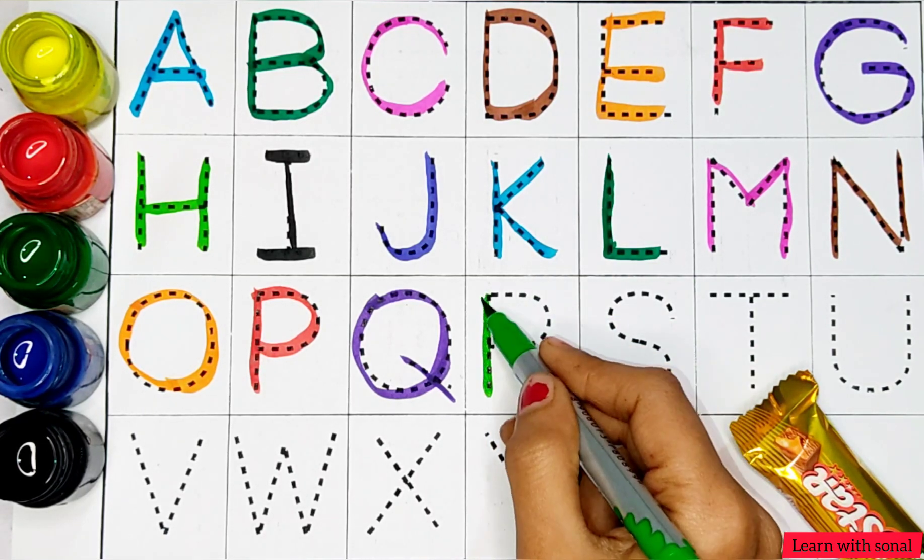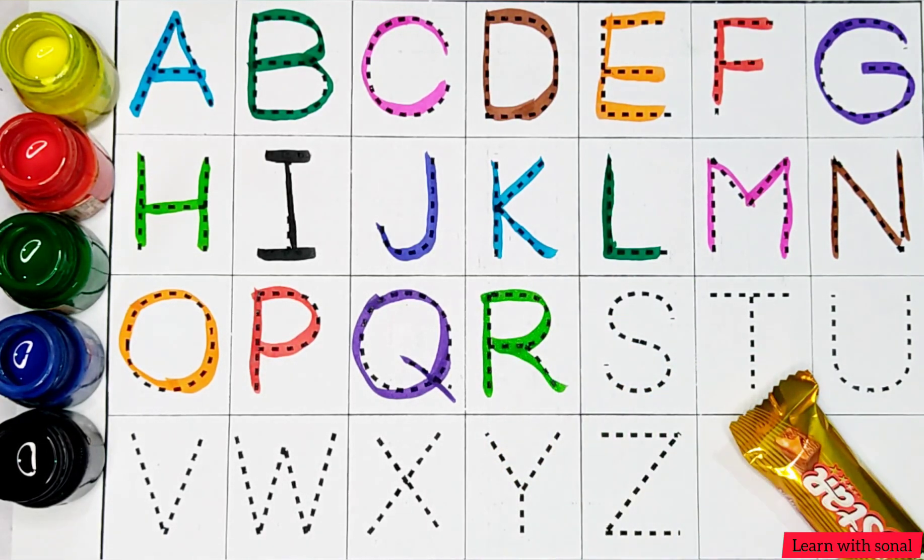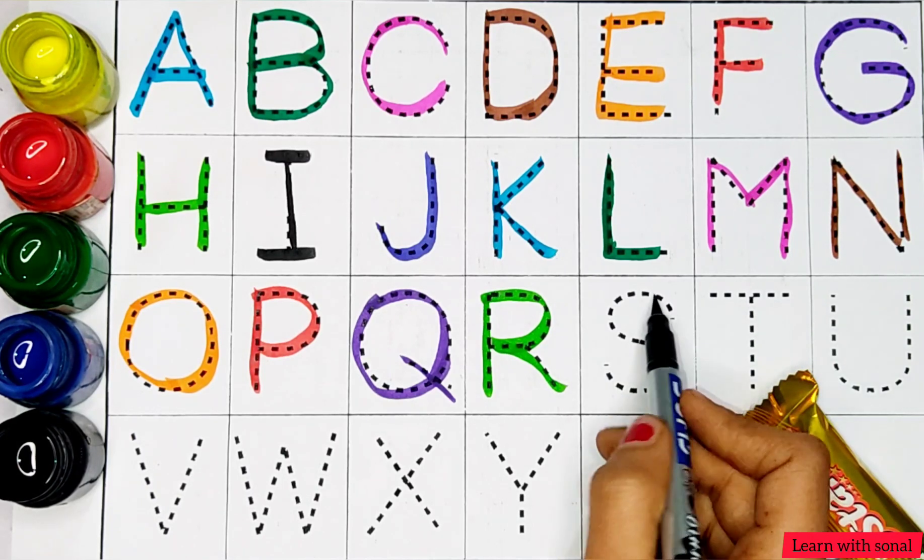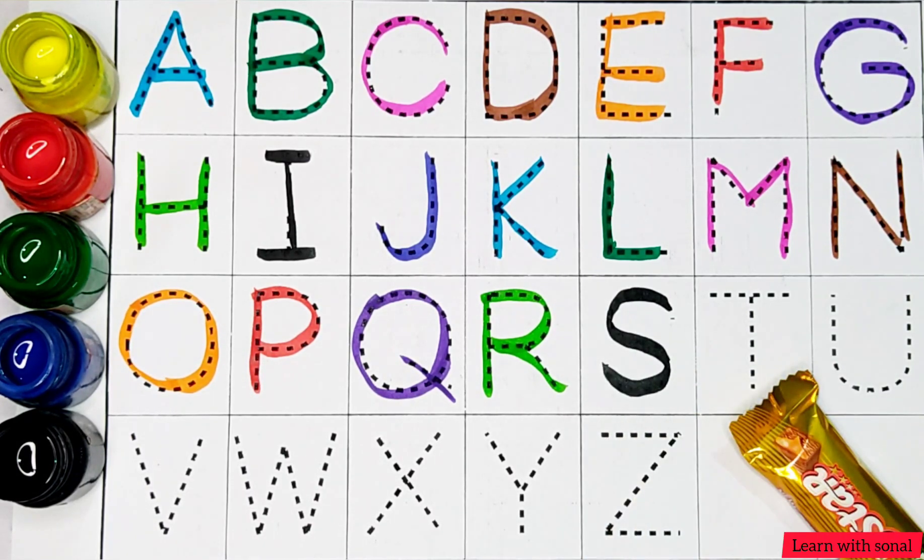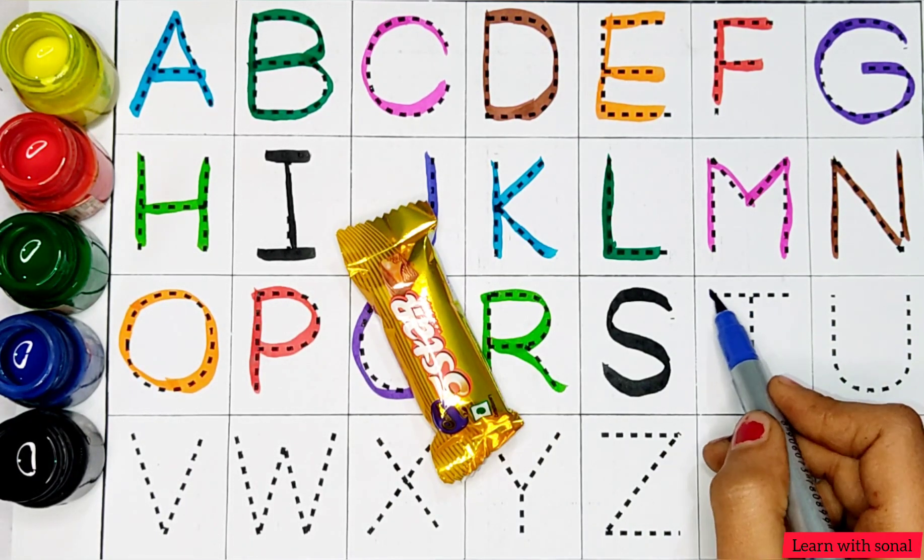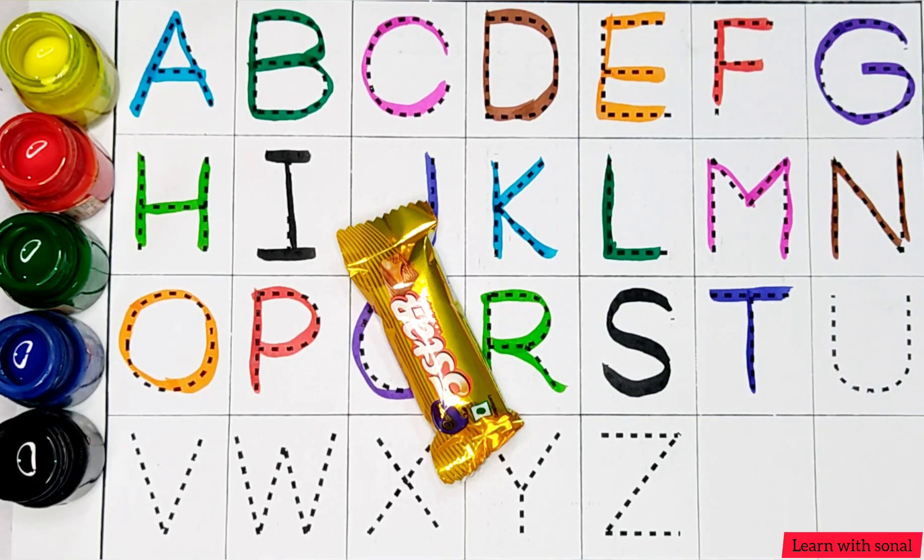R. R for rose. S. S for sunflower. T. T for trumpet.